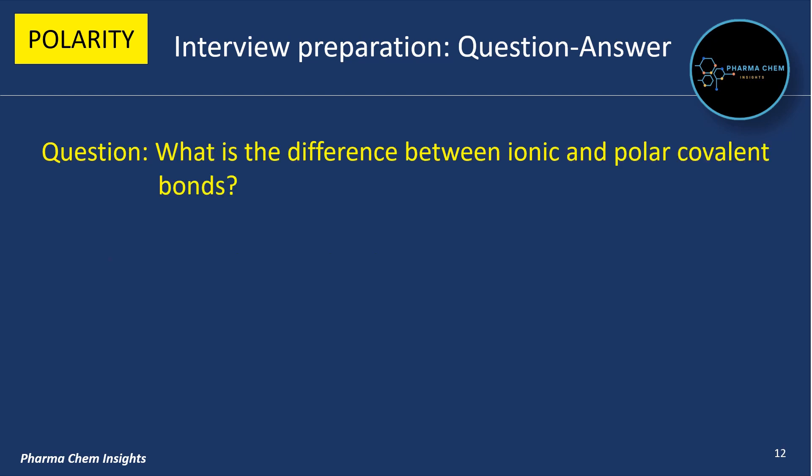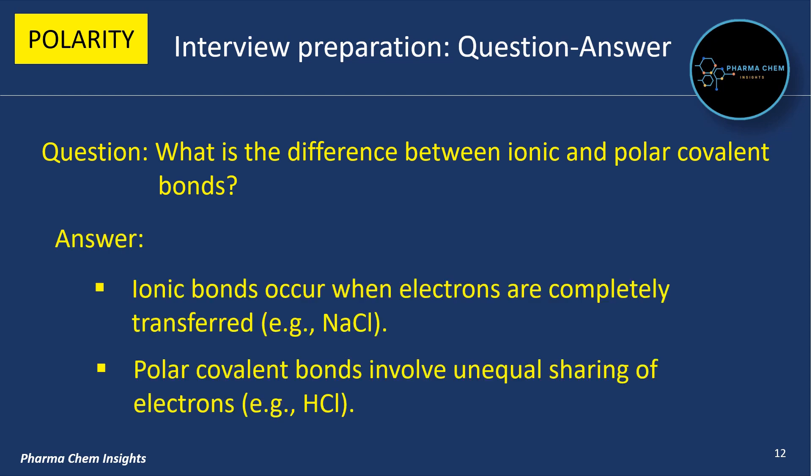Next question: what is the difference between ionic and polar covalent bonds? Answer: ionic bonds occur when electrons are completely transferred — example: NaCl. On the other hand, polar covalent bonds involve unequal sharing of electrons — example: HCl.